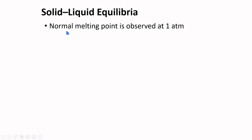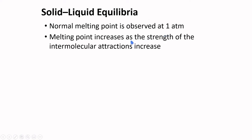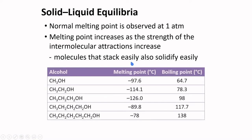Normal melting point is observed at 1 atmosphere. Melting point increases as the strength of intermolecular attractions increase. Molecules that stack easily also solidify easily. Consider the melting and boiling points of these alcohols with increasing number of carbons. Here you will see that boiling point increase as the number of carbons increase.